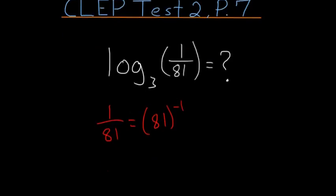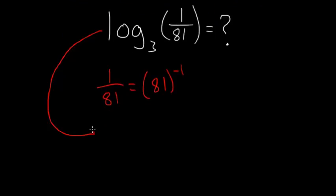So we can rewrite our entire expression as being equal to log base 3 of 81 to the minus 1. The reason that we do this is so that we can take this exponent here and put it in front.